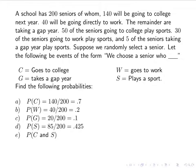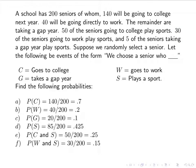Next, probabilities of the form 'something and something.' The probability of C and S — going to college and playing a sport — is 50 out of 200, which is 0.25. The probability of W and S — going to work and playing sports — is 30 out of 200, which is 0.15. The probability of G and S — taking a gap year and playing a sport — is 5 out of 200, which is 0.025.